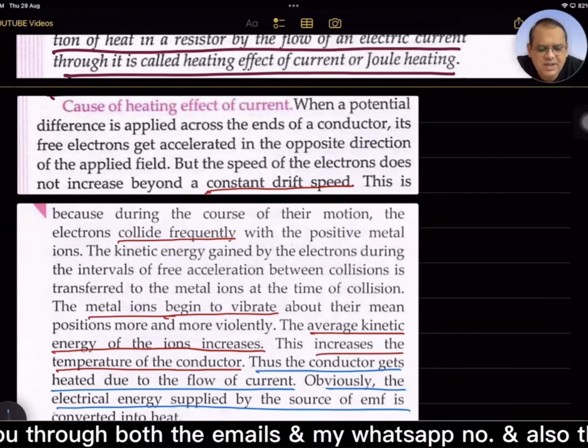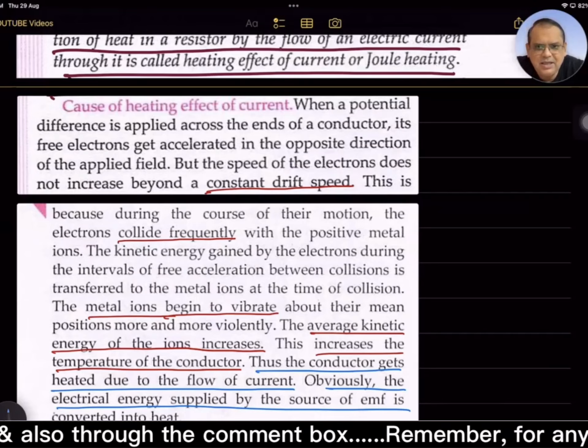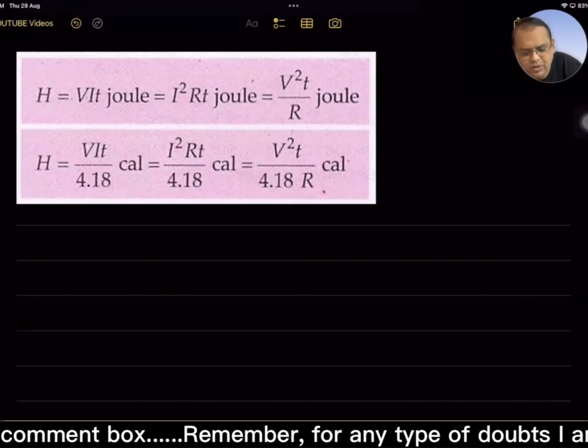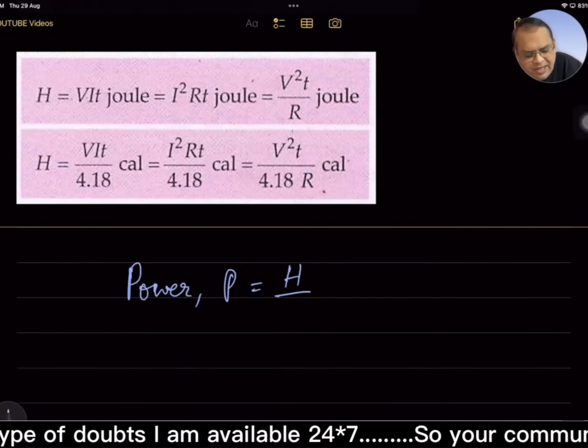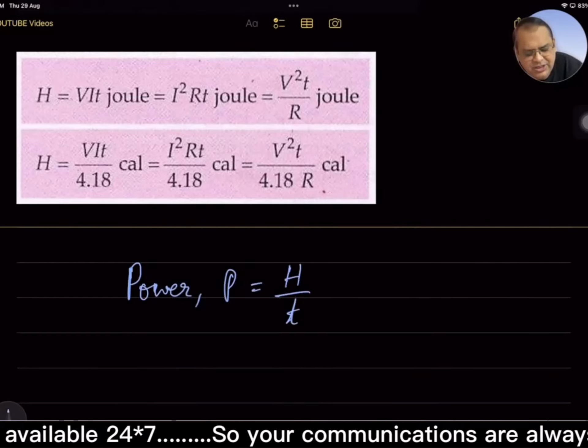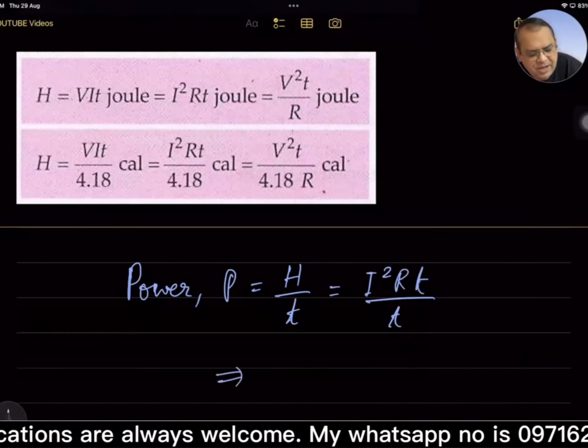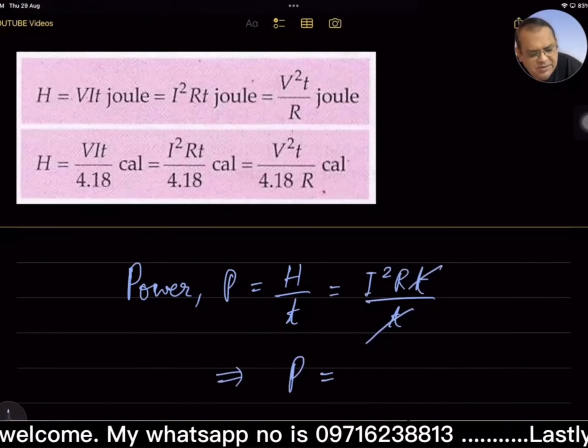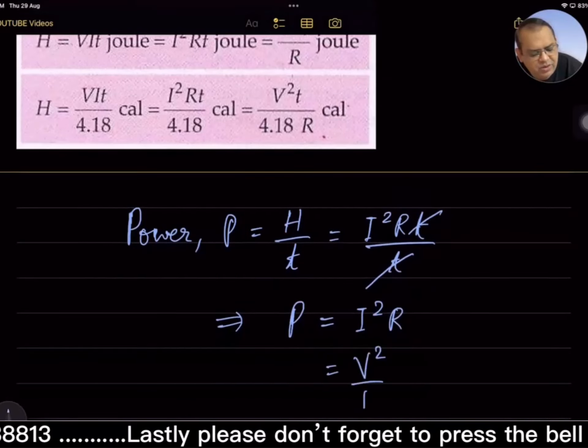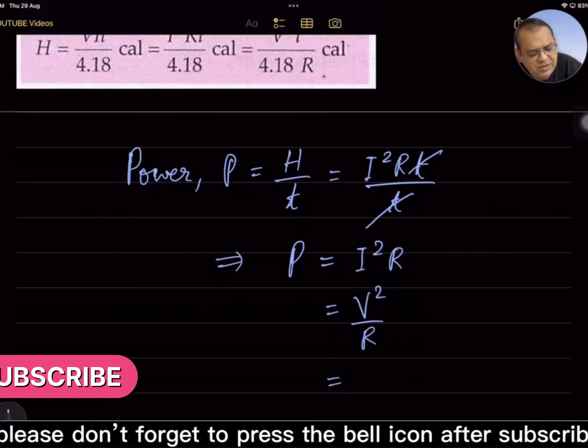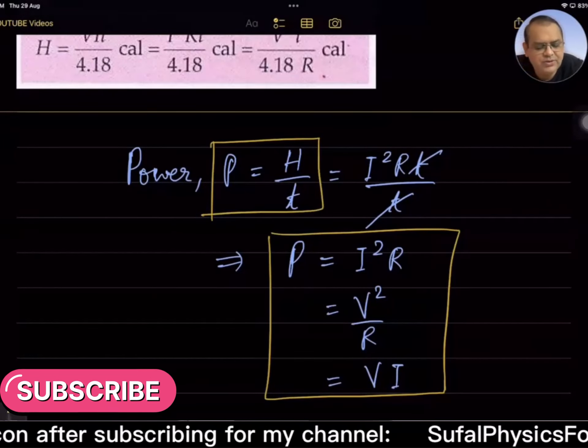These are the key words and phrases we need to remember while understanding heating effect of current. From this pink box, power P is H by T, which equals I²R, equals V²/R, equals VI.